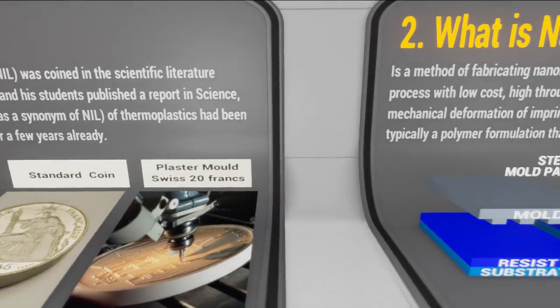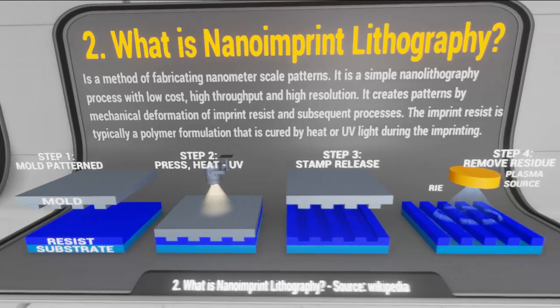Nano-imprint lithography is a method of fabricating nanometer-scale patterns. It is a simple nano-lithography process with low cost, high throughput, and high resolution. It creates patterns by mechanical deformation of imprint resist and subsequent processes. The imprint resist is typically a monomer or polymer formulation that is cured by heat or UV light during the imprinting. Now we can see the steps of the nano-imprint lithography process.